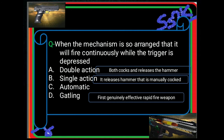Single action is a mechanism wherein if the shooter pulls the trigger, it will only release the hammer — that is one action only. So for single action, you need to manually cock the firearm first, then one trigger pull is the only action it performs. The Gatling gun is the first genuinely effective and rapid-fire weapon.